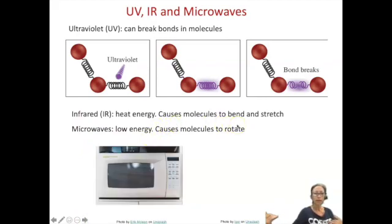Infrared just causes molecules to bend and stretch. We'll be looking at that more in talking about global warming. And microwaves are low energy and only cause molecules to rotate and very specific molecules to rotate in response to the type of microwave radiation that's sent out. So these are both not dangerous forms.